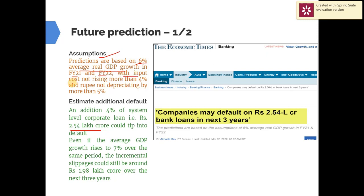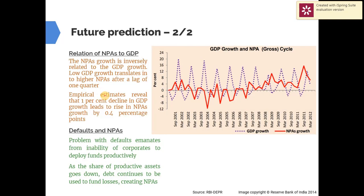Additional assumptions include that input costs such as raw material costs should not rise more than 4%, and the rupee should not depreciate by more than 5%. Even if average GDP growth rises to 7% for the same period, defaults still come to around 2 lakh crore in the next three years.